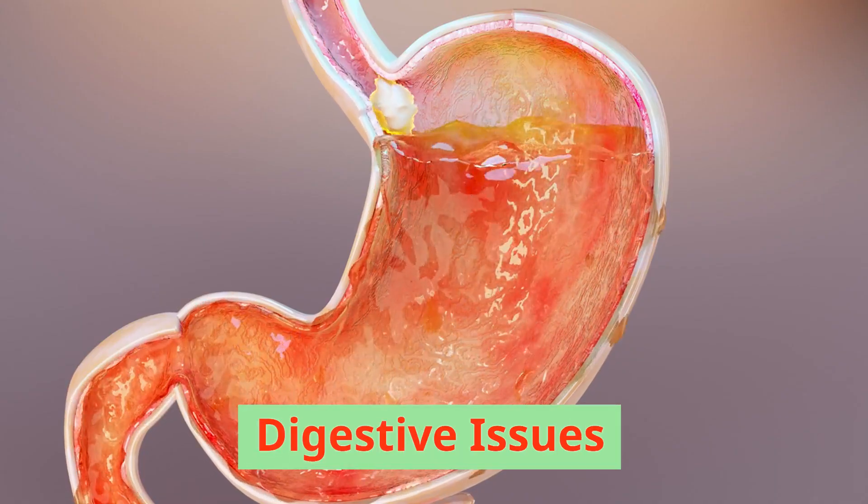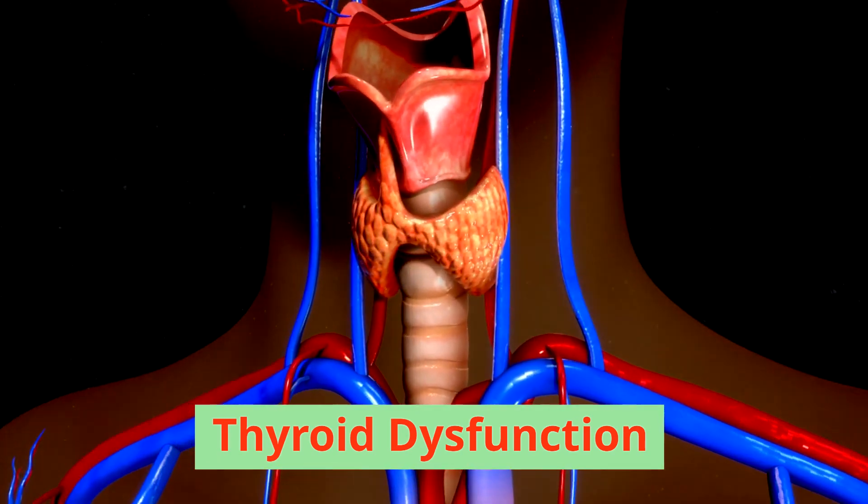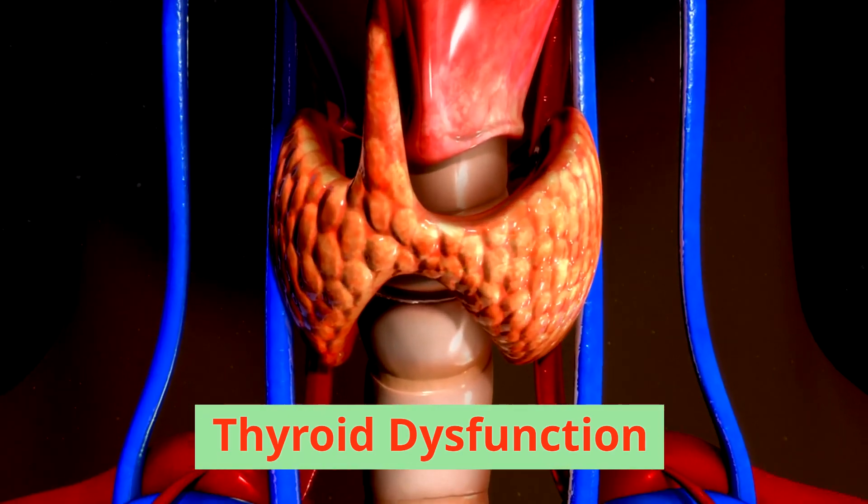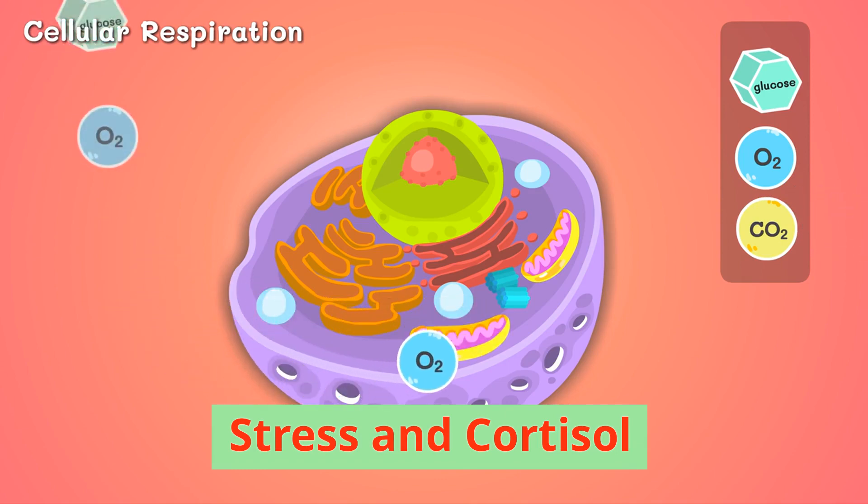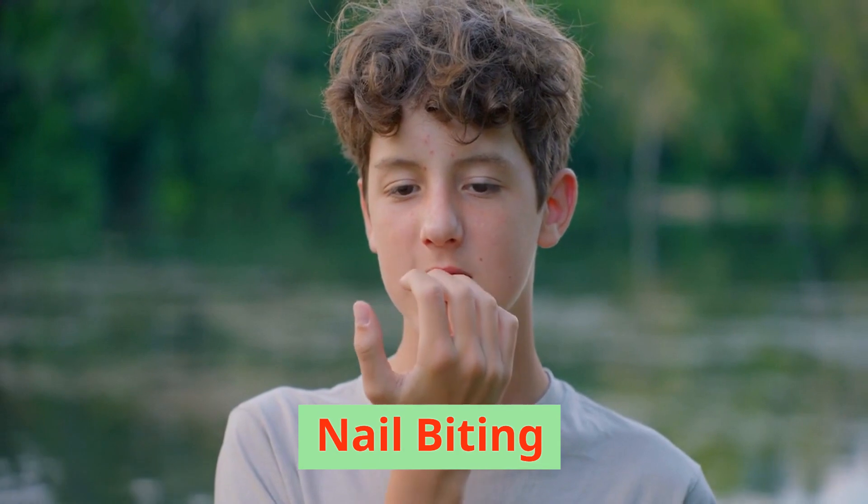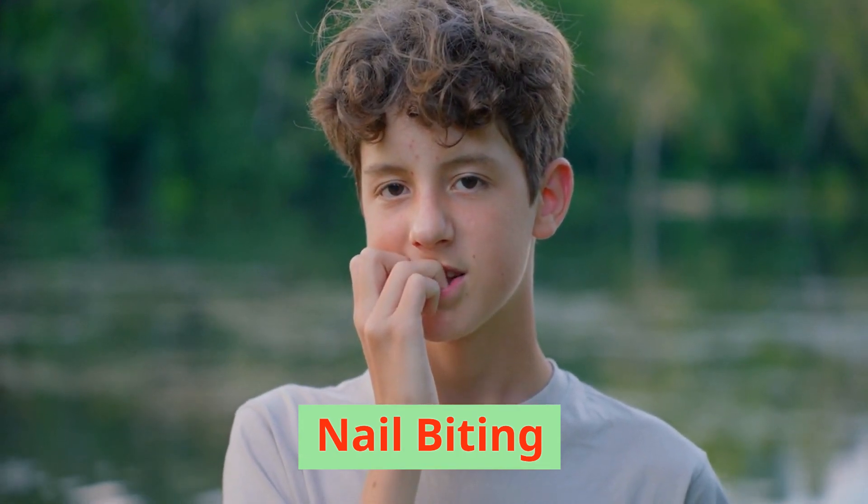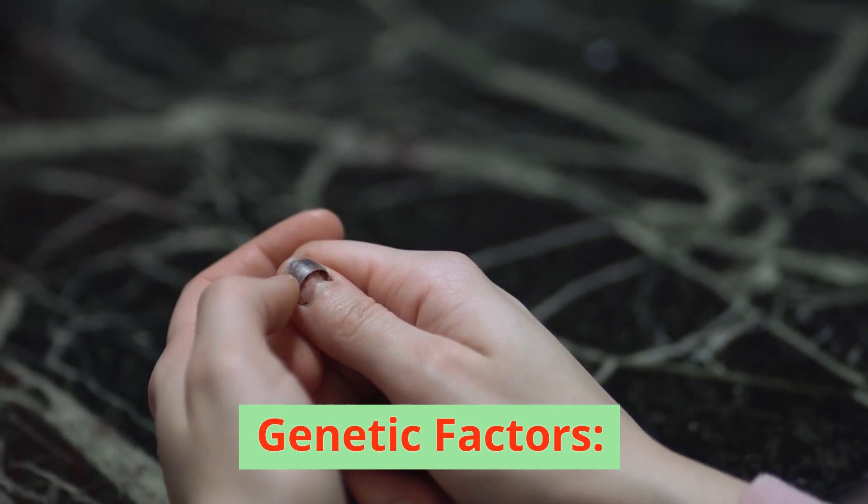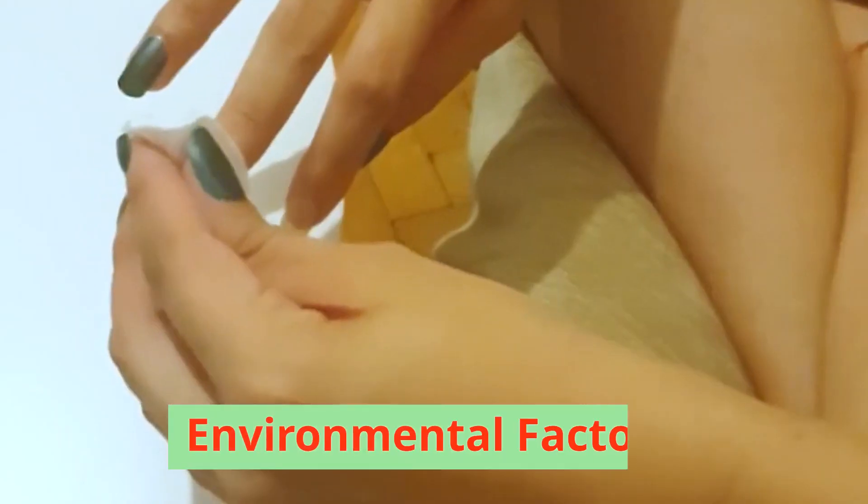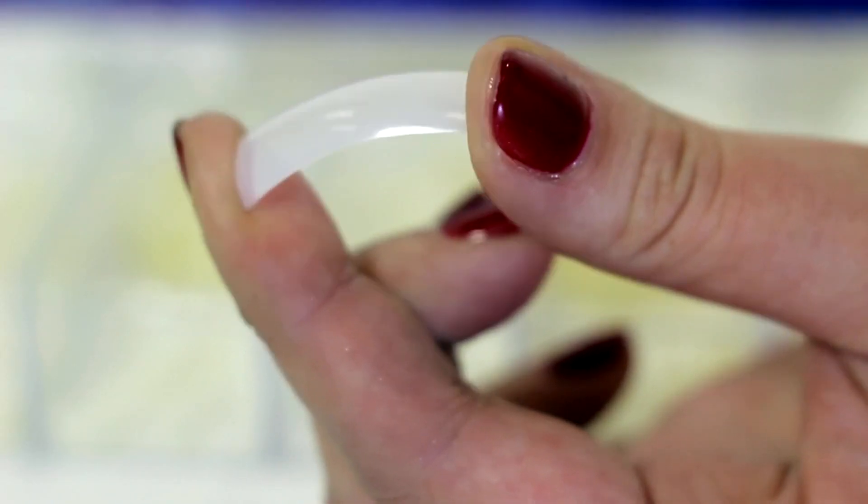Digestive issues: Poor digestion and absorption of nutrients crucial for nail health, such as iron and calcium, can manifest as vertical lines on nails. Thyroid dysfunction: An underactive thyroid gland can disrupt nail growth and health, contributing to the development of ridges and brittleness. Stress and cortisol: Chronic stress and elevated cortisol levels can deplete vital nutrients like biotin, impairing nail growth.